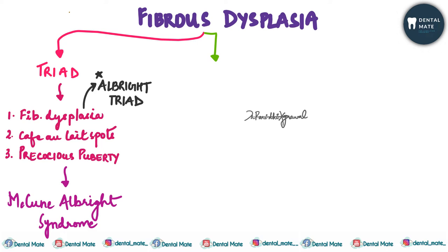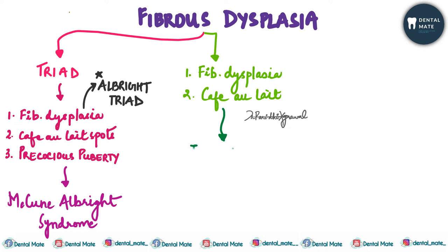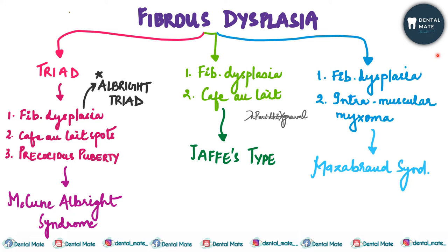If fibrous dysplasia is present with only café-au-lait spots, this is known as Jaffe's type. If fibrous dysplasia is seen associated with intramuscular myxoma, this forms the Mazabraud syndrome. To summarize: fibrous dysplasia with café-au-lait spots only is Jaffe's type; with café-au-lait spots and endocrine disturbances is McCune-Albright syndrome; with intramuscular myxoma and no café-au-lait spots is Mazabraud syndrome.